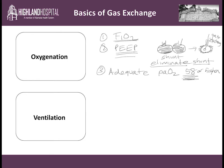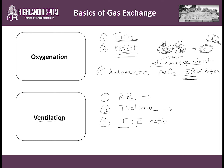And number two, the other concept is ventilation. What are the settings on the ventilator used to adjust ventilation? Number one, it's respiratory rate. And number two, it's tidal volume — how fast are you blowing the CO2 out, and how much air is going in and out during each cycle of breath. You can also control ventilation either directly or indirectly by altering the I to E ratio — the ratio of inspiratory time to amount of time in expiration. We'll learn more about this when you arrive here at Highland.